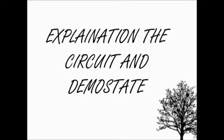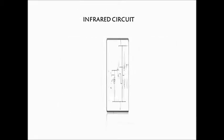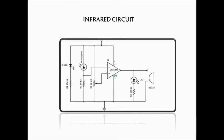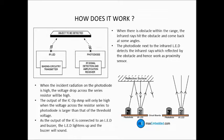Okay, that's all from me. So, let's welcome Atika to explain the next part. Hello everyone. I'm Noh Atika Bintu Abdul Azim. So, I'm going to explain to you about technical details. The concept of this circuit is simple. The infrared LED keeps transmitting the infrared rays up to some range. When there is obstacle within the range, the infrared rays hit the obstacle and come back at some angles. The photodiode next to the infrared LED detects the infrared rays which are reflected by the obstacle and hence works as a proximity sensor.